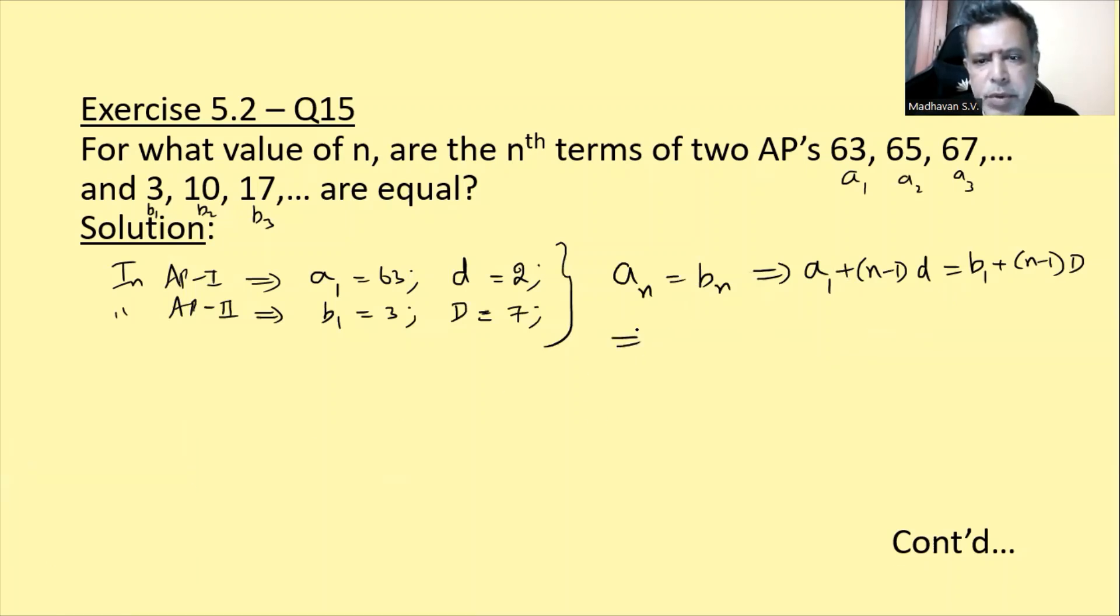Tho abhi substitute karne se values ko, 63 plus n minus 1 times 2 is equal to 3 plus n minus 1 times 7 nikalta hai. Tho 63 ko idar laane se 63 minus 3 ho jaata hai.